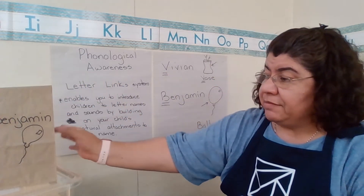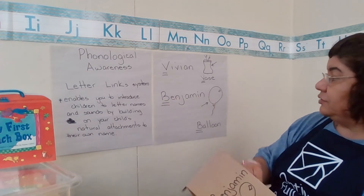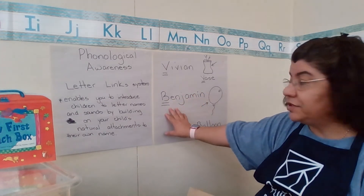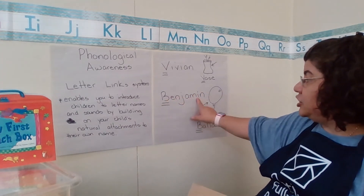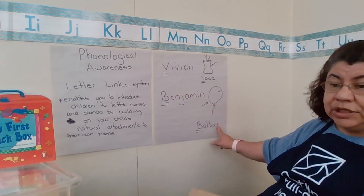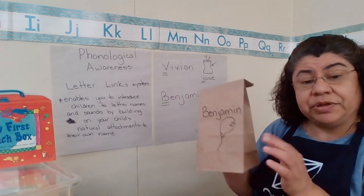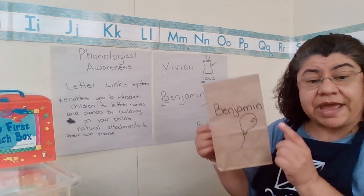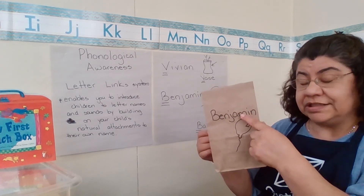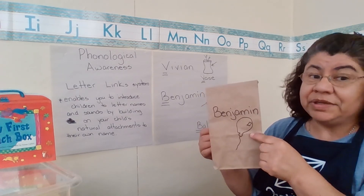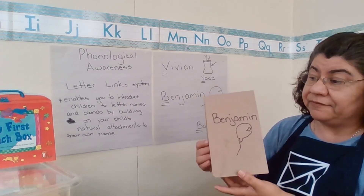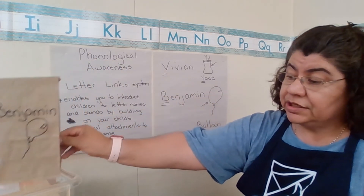Another example, depending on your child's name, is Benjamin. B, b, Benjamin — B, b, balloon. And putting it on a lunch bag makes it fun for the kids, because maybe there are two Benjamins in the classroom, but there might not be two Benjamins with two balloons. So it helps them identify whose is whose.